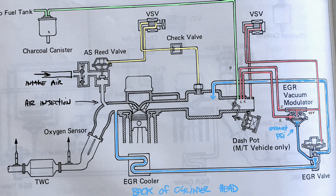That leaves the charcoal canister. It has two ports — one goes to the tank, and the other is the purge port.